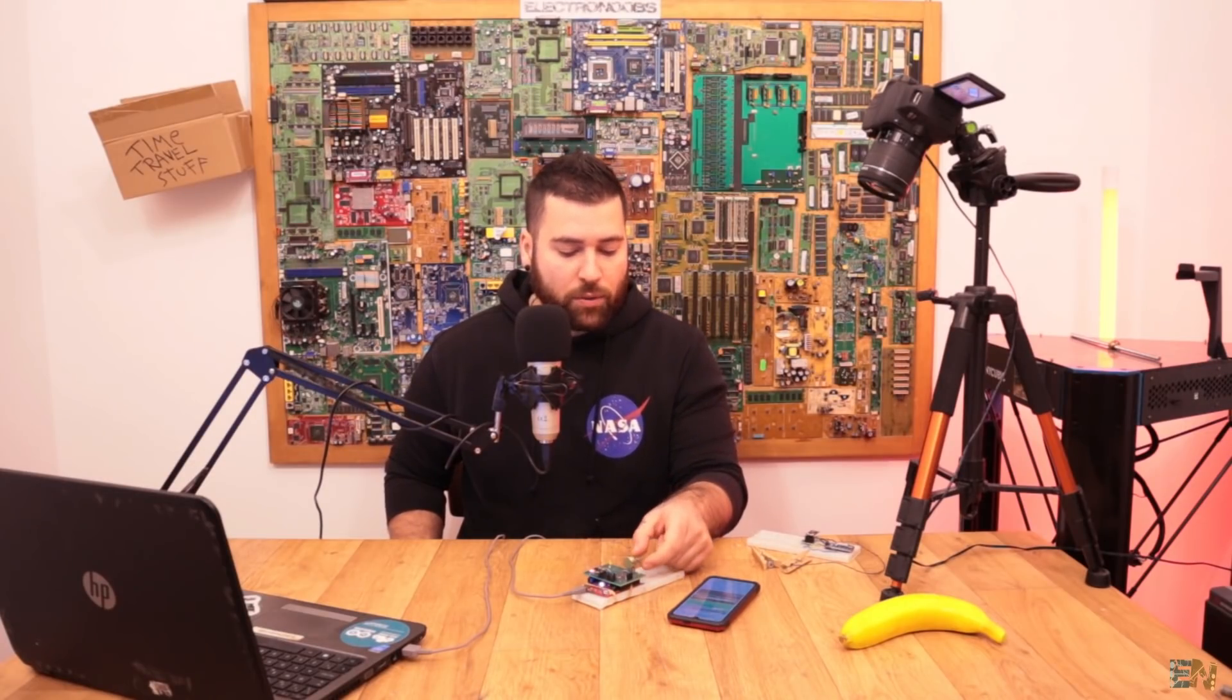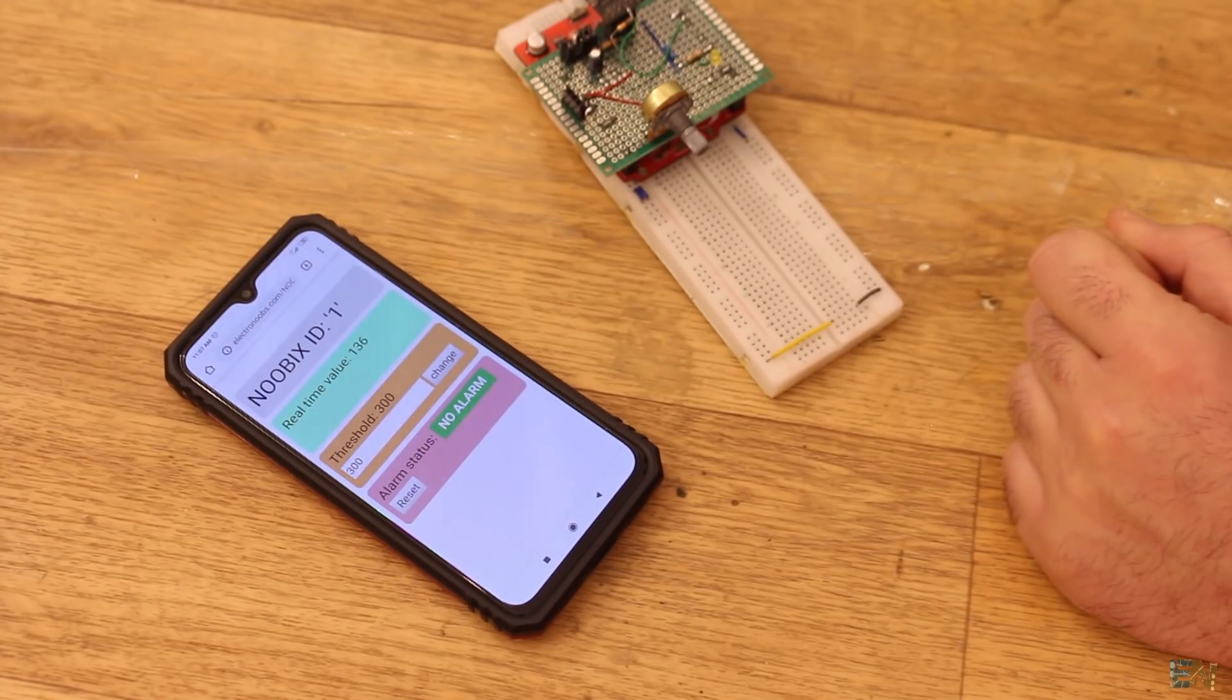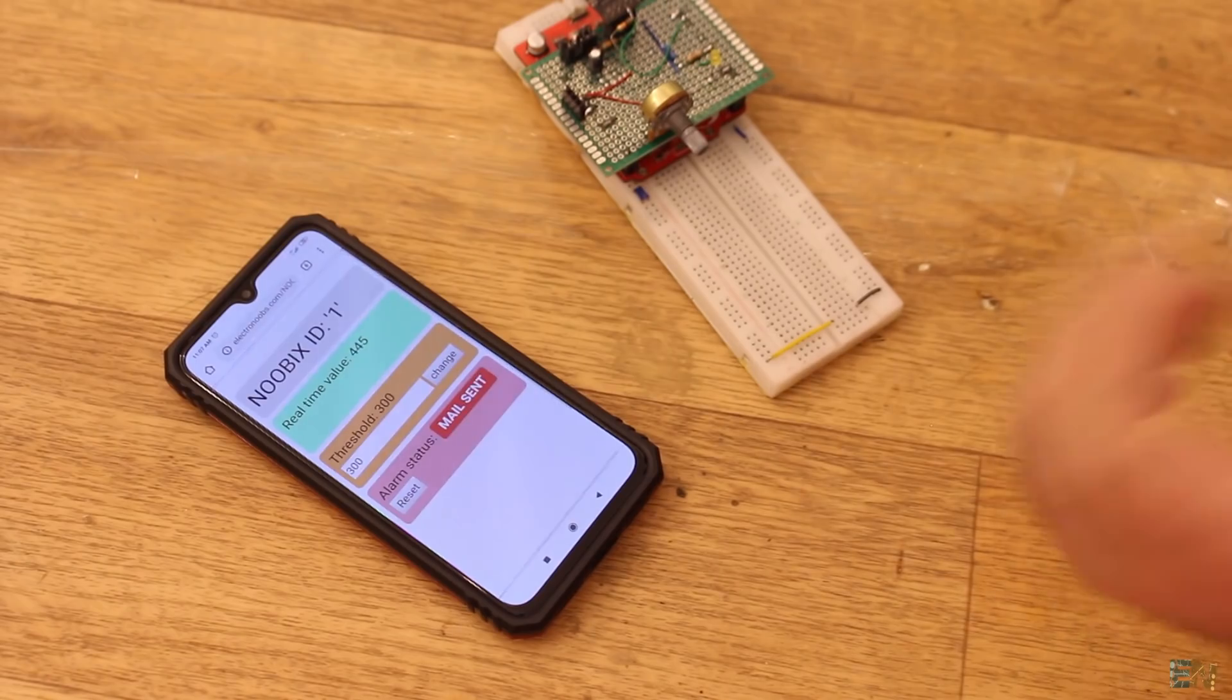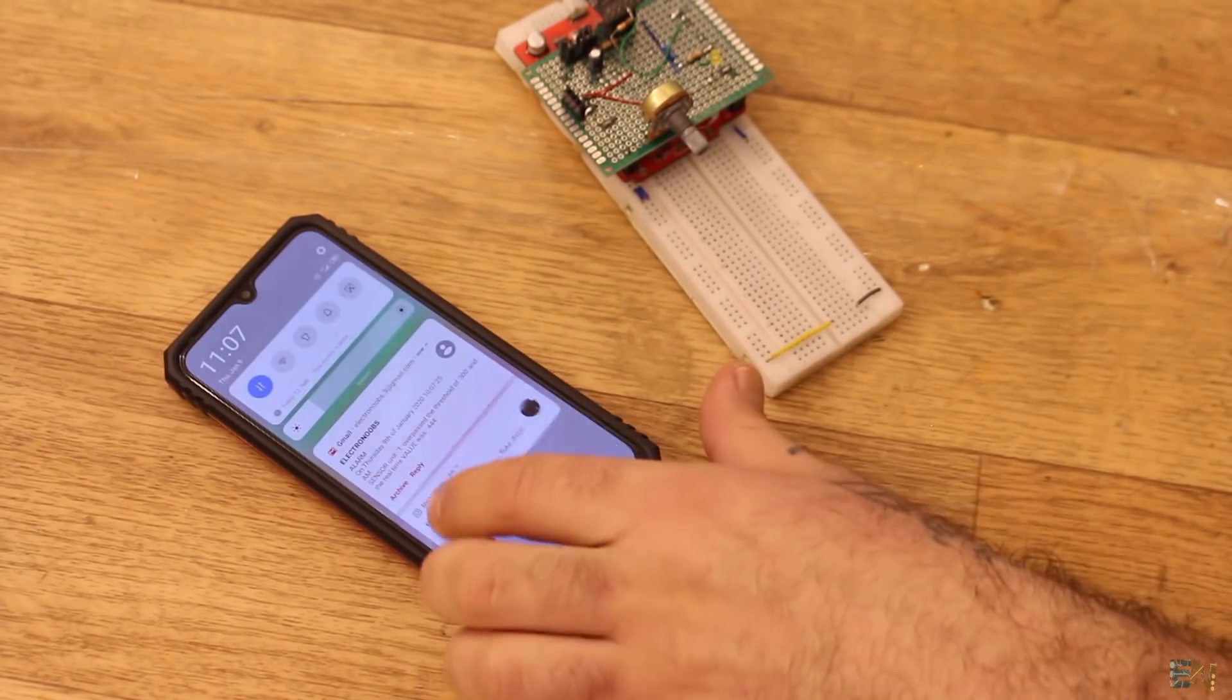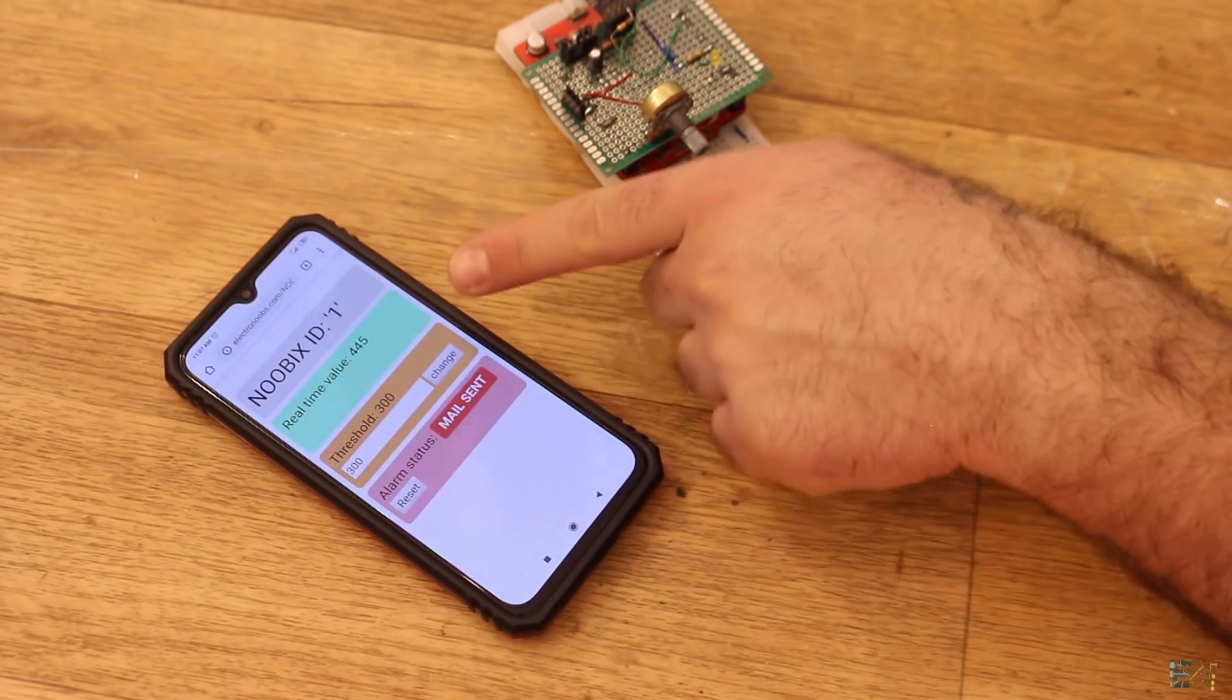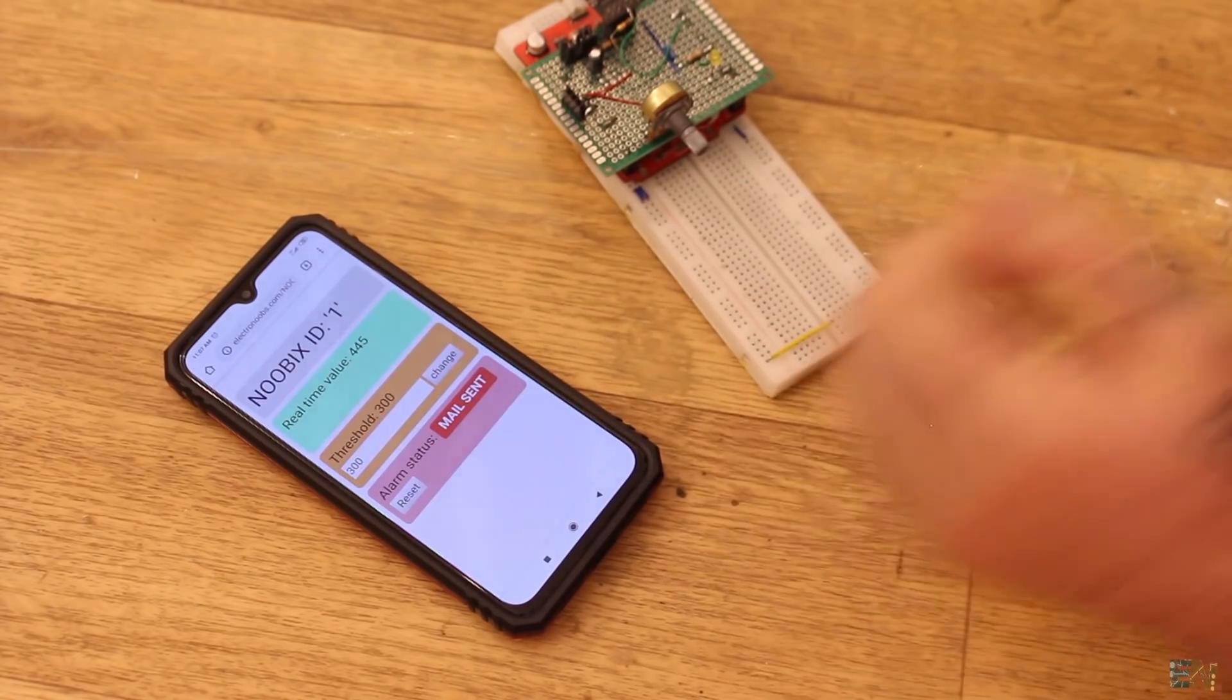Let's see what happens if I increase the potentiometer even more. Let's wait for a few seconds to refresh the page. There you have it, you heard the sound of my mail. If I scroll down, as you can see, I have a mail received from my website. At the same time, we can see that the real-time value is 445 which is above the threshold value.